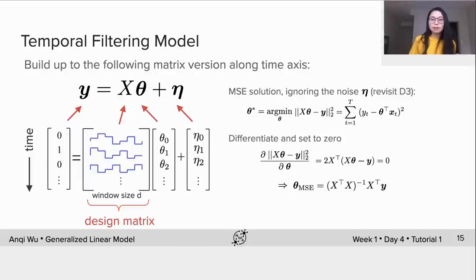Here in this temporal filtering model we call XᵀX the stimulus covariance and XᵀY spike-triggered average, which is STA for short.